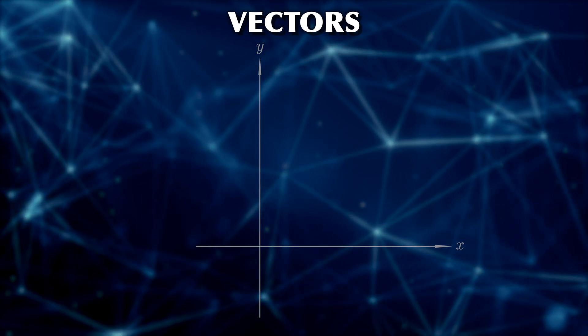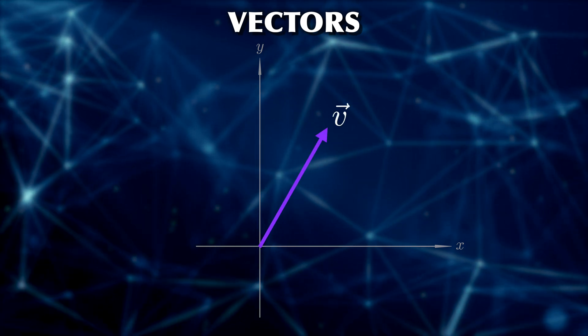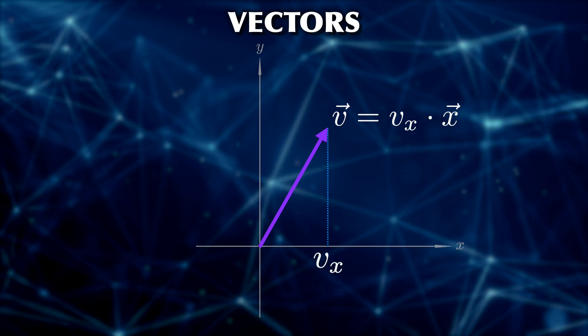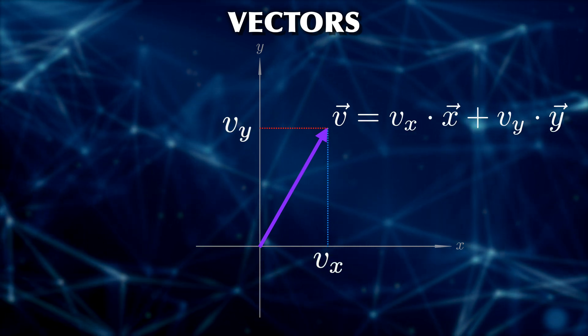We can also have a vector in an intermediate direction, meaning it has a component in the x direction and another component in the y direction.